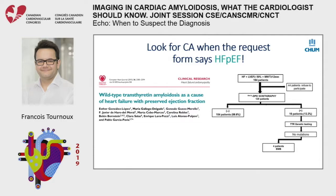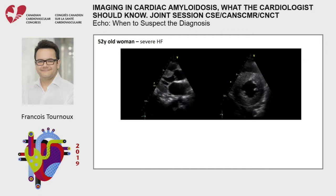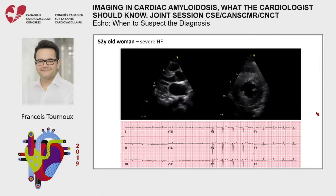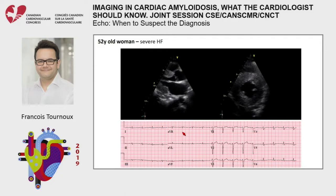When reading an echo, use everything in the medical chart. Just look at the EKG — when you see wall thickness but microvoltage on the EKG, the discrepancy between the two tests should raise the possibility of the diagnosis.